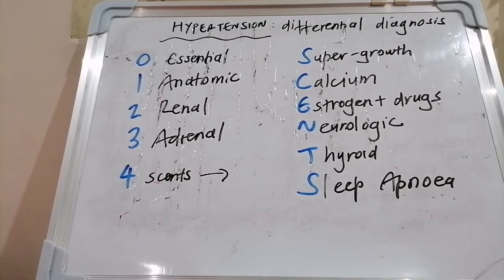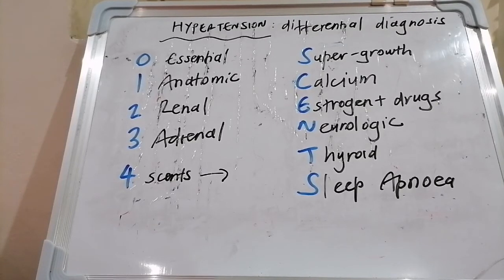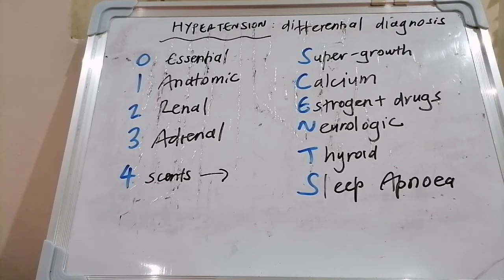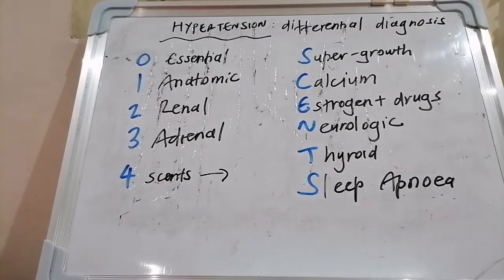For the phaeochromocytoma workup, consider it if there is paroxysmal or severe hypertension refractory to usual anti-hypertensives, symptoms of catecholamine excess, hypertension triggered by beta-blockers, monoamine oxidase inhibitors, micturition, or Valsalva, an adrenal incidentaloma with hypertension, or part of a genetic syndrome like MEN 2A, MEN 2B, Von Hippel-Lindau, or neurofibromatosis.